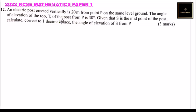An electric post erected vertically is 20 meters from point P on the same level ground. The angle of elevation of the top T of the post from P is 30 degrees. Given that S is the midpoint of the post, calculate correct to 1 decimal place the angle of elevation of S from P.